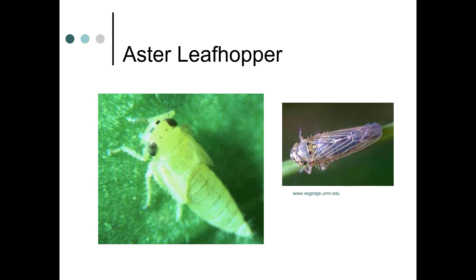This is the aster leafhopper. On the right we have the adult; on the left we have the wingless nymph — that would be when you need to try to manage it. They are out pretty early in the season. I've had leafhoppers for weeks in my garden.